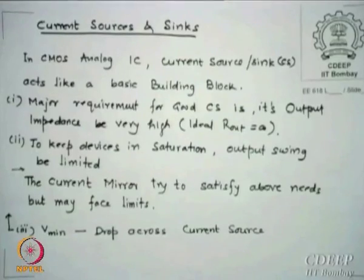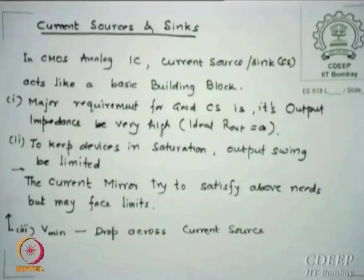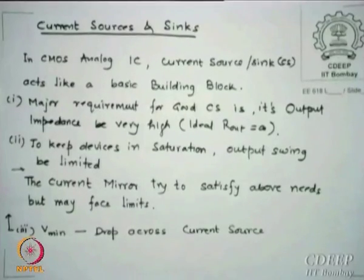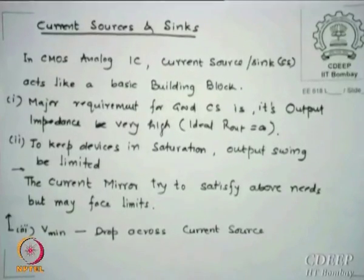Based on these requirements, we have already looked into a simple current mirror and the variation in parameters — particularly beta, Vt, and lambda. Lambda parameter variations are generally very small, so they need not be taken every time, but for completeness we did include them. We realize that to reduce the percentage error between the mirror source and the output current, we must manage variations to be as small as possible.